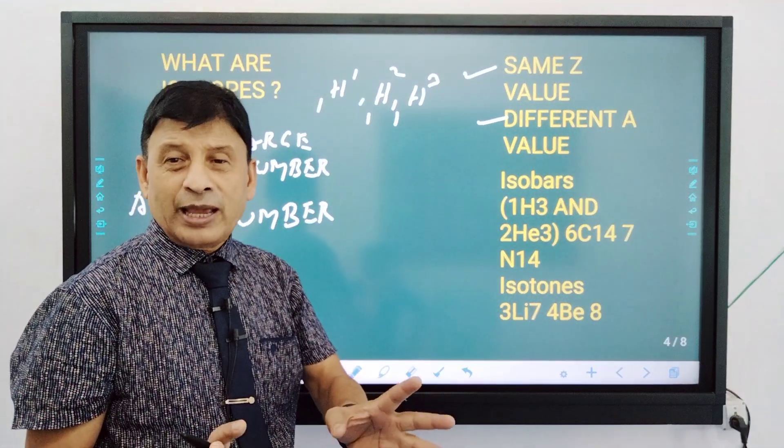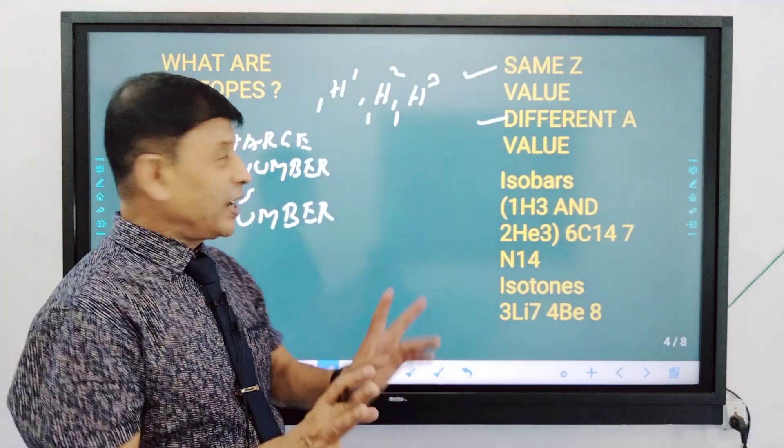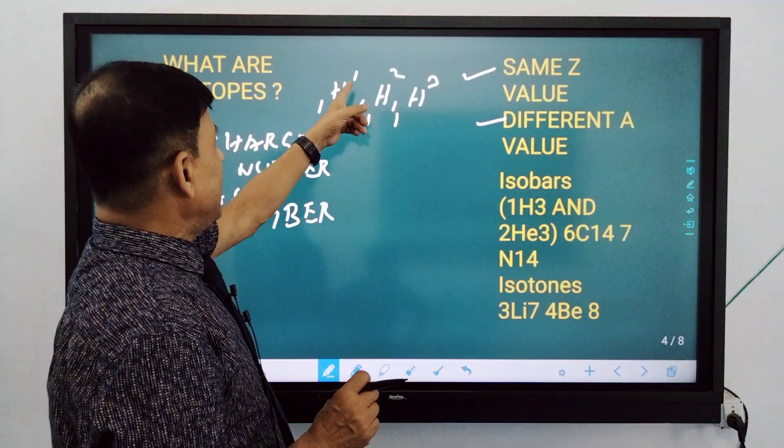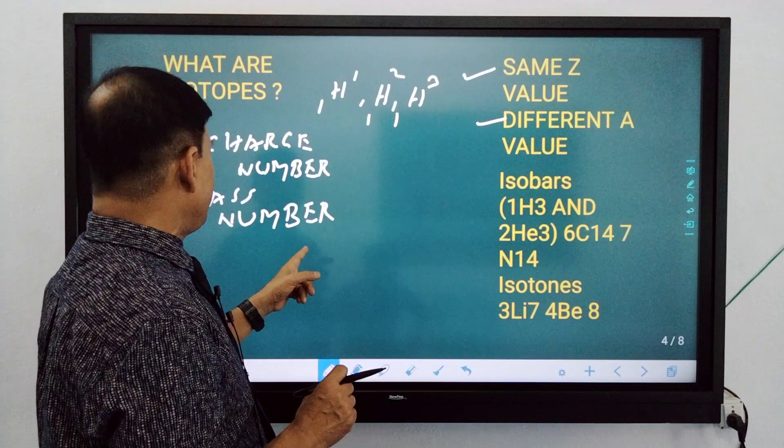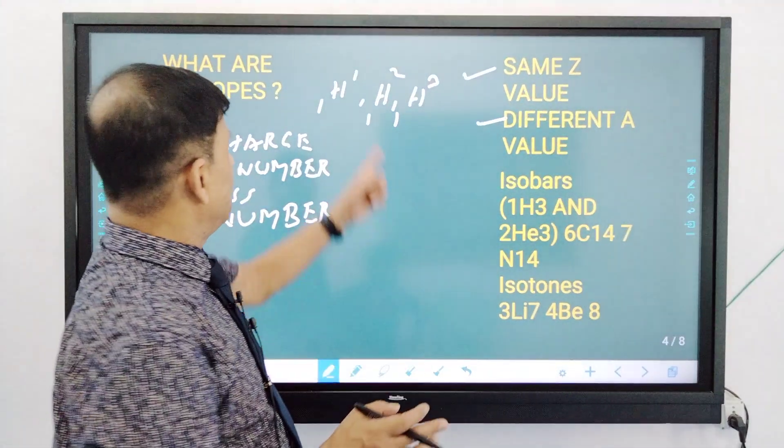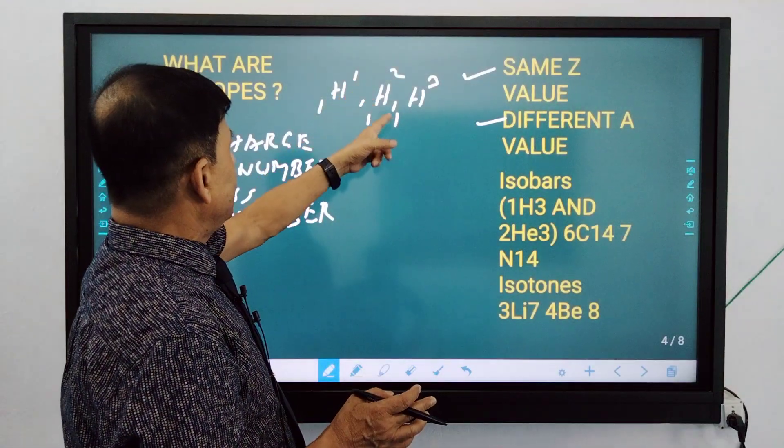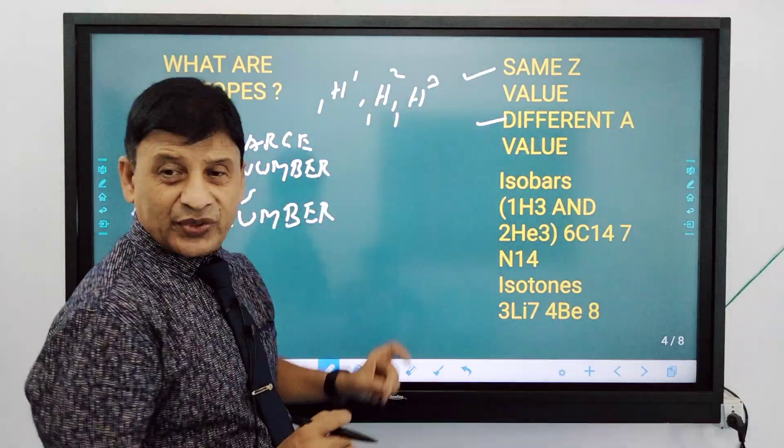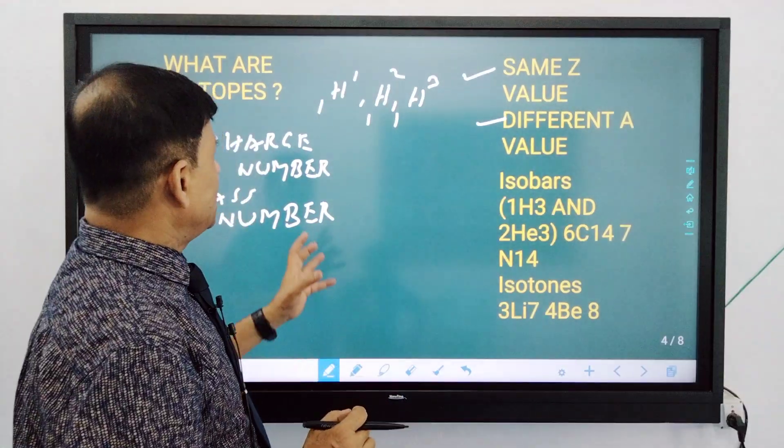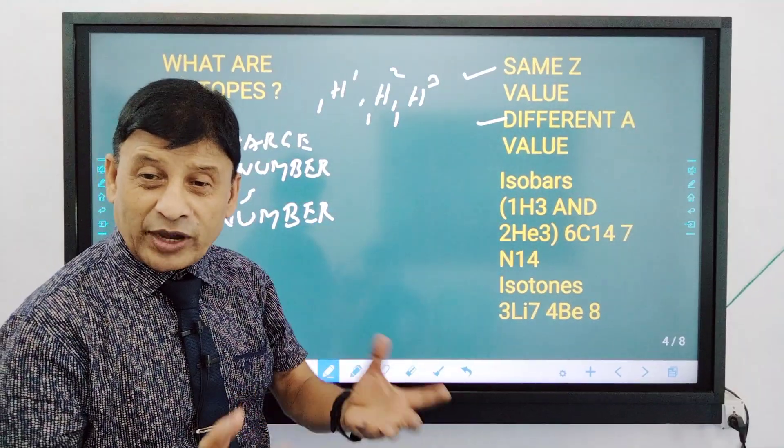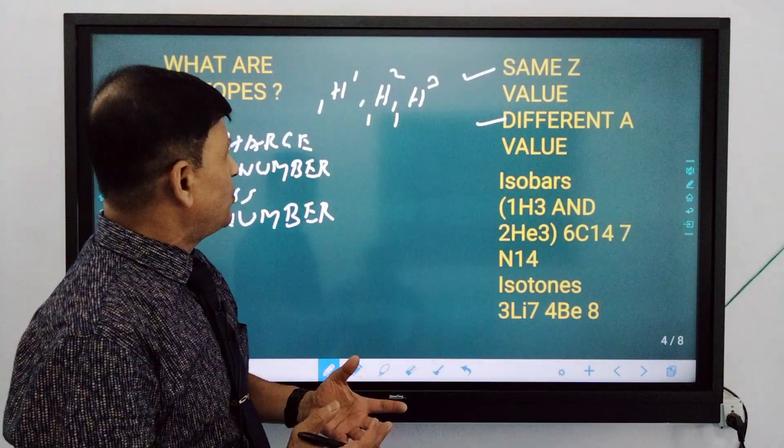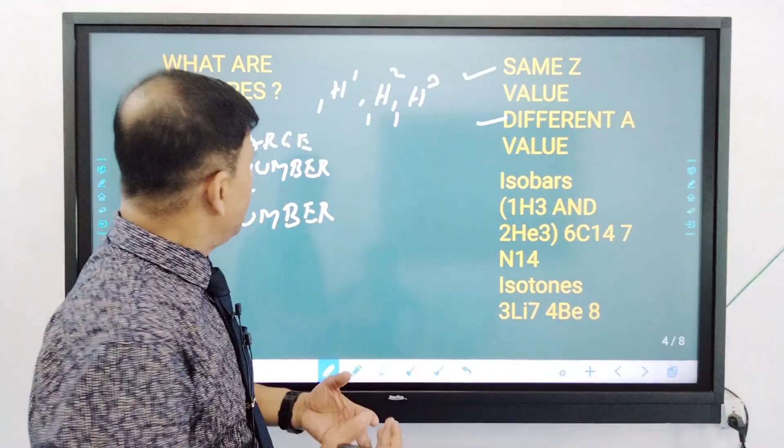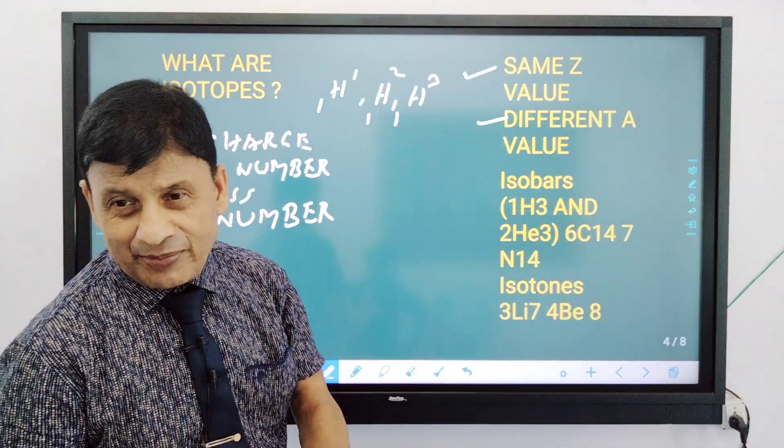What is the proton? The proton is 1. The mass number is 1, 2, 3. Hydrogen is H1, deuterium is H2, tritium is H3. These are isotopes of hydrogen.